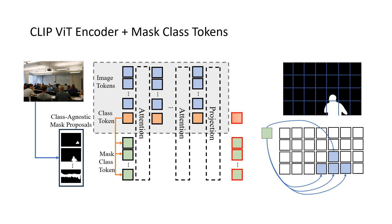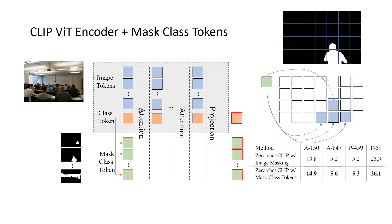A good property of this is that if the mask is simply the whole image, then the output feature will be exactly the same as the class token, which is the image-level global feature. Also note that the mask class tokens, apart from attending the image tokens, also attend the class token, which provides global context features. This is very important as in some cases it's hard to recognize only from the masked region. By doing this, we already have a zero-shot segmentation model using a pre-trained class-agnostic mask proposal network and the pre-trained CLIP model. The mask class token approach shows superior results compared to the vanilla image masking approach on four benchmarks, and is also far more efficient since we only run CLIP once instead of 100 times.